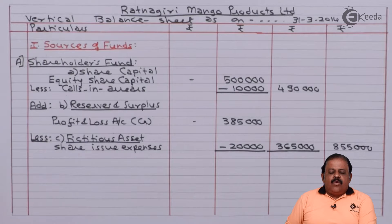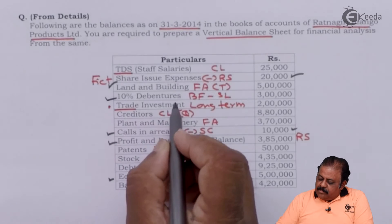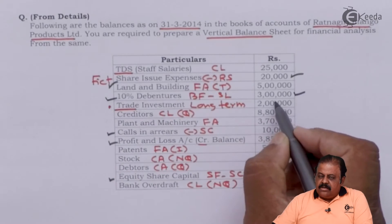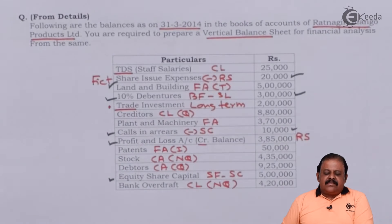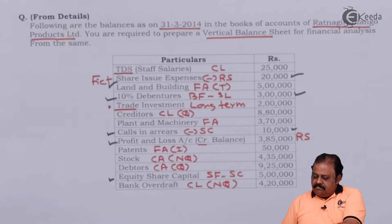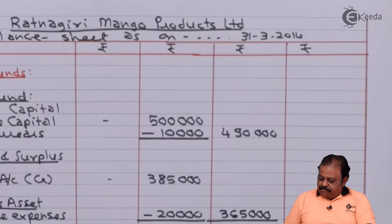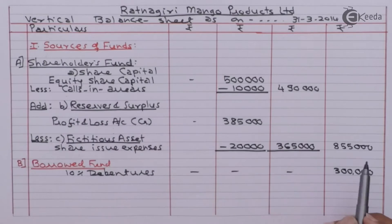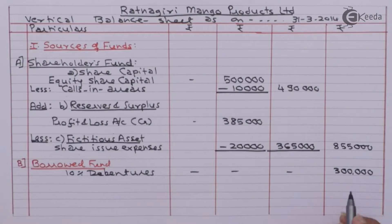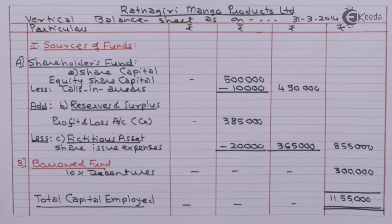Next is borrowed fund. We have 10% debentures, so borrowed fund is 3 lakhs. Adding shareholders fund and borrowed fund gives total capital employed of 11 lakhs 55,000. We have completed the first part of the balance sheet.